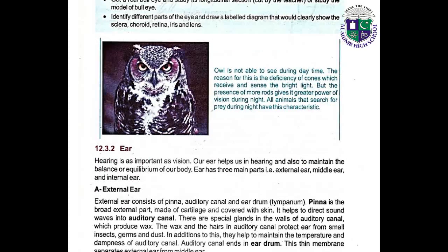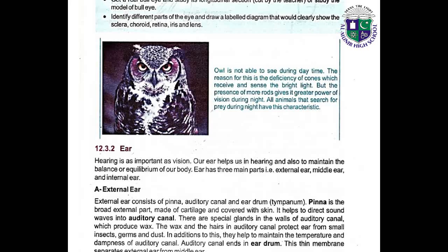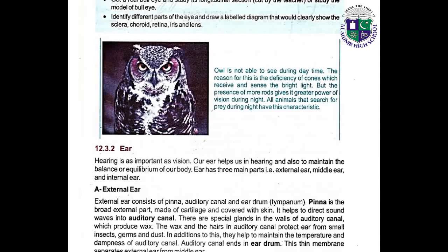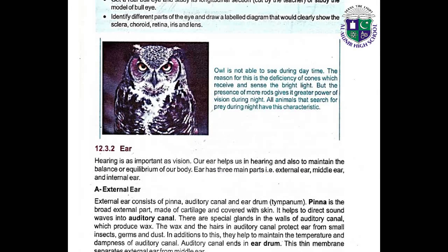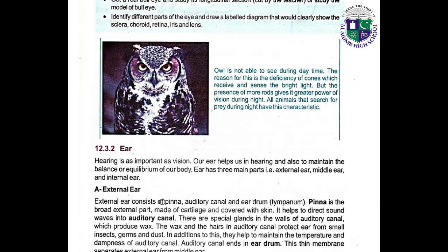Our next topic is hearing. Hearing is as important as vision. Our ear helps us in hearing and also to maintain the balance or equilibrium of our body. The ear has three main parts: the external ear, the middle ear, and the internal ear.